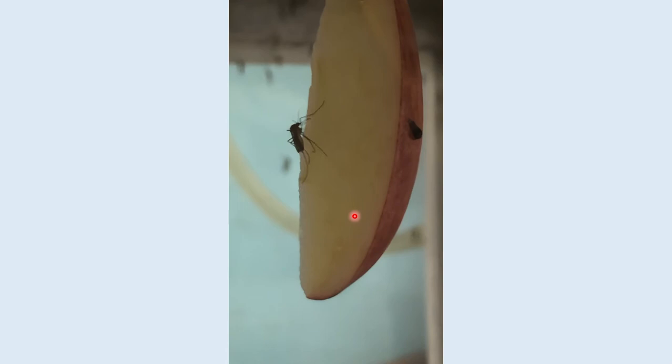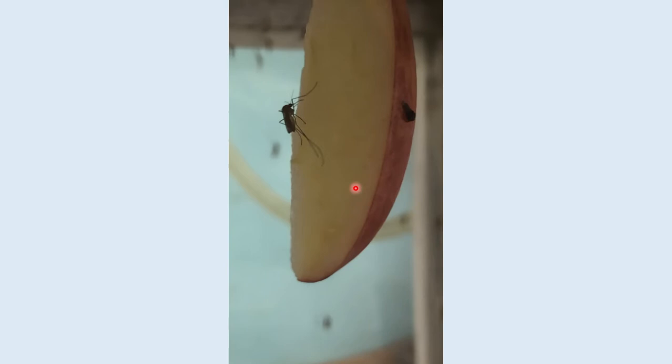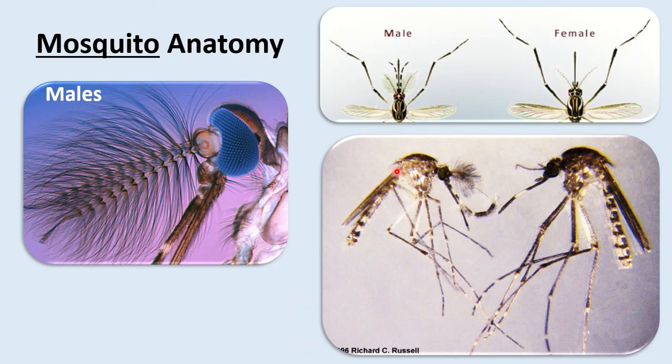Here is a video of a female sugar feeding in the lab. You can see her moving her proboscis around on the apple. We used apples in the lab during my master's program to provide a sugar source for the males and females. So in case you didn't believe me, here is a female feeding on that apple.